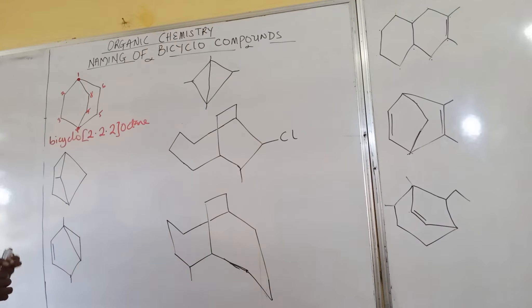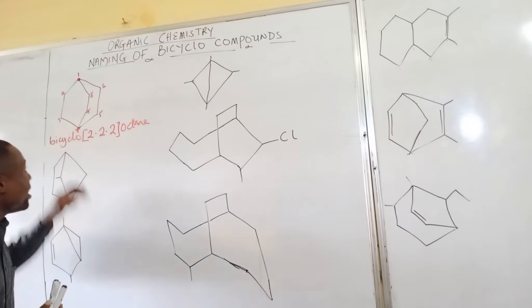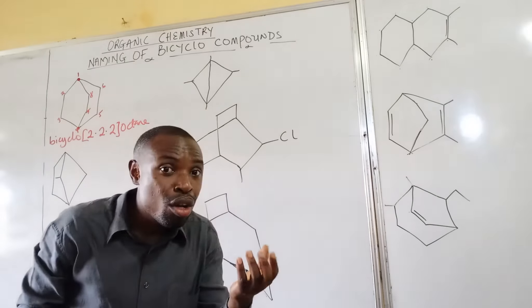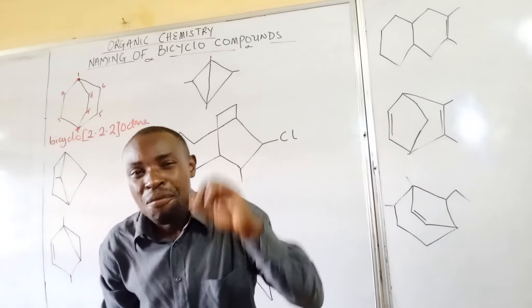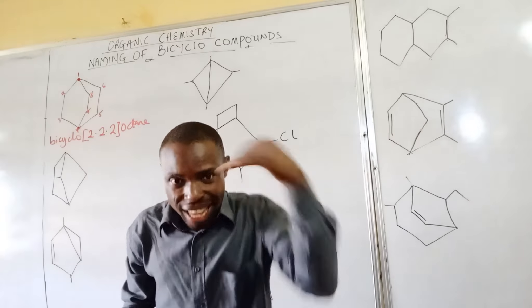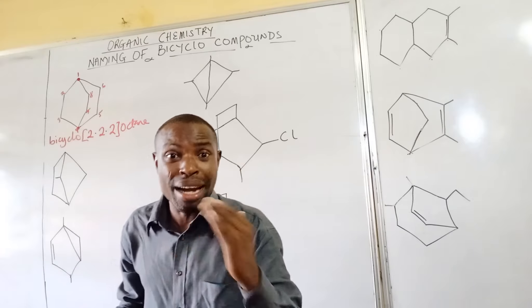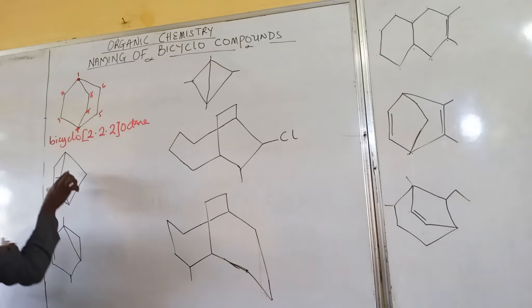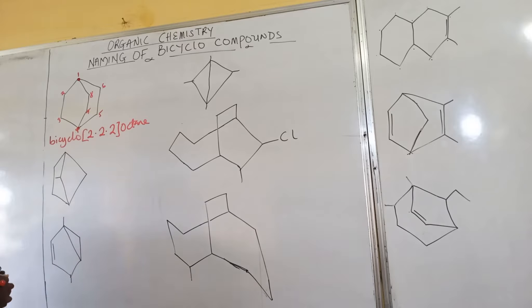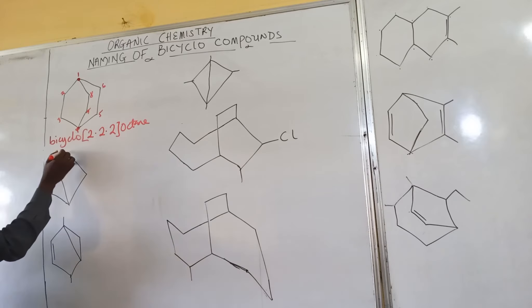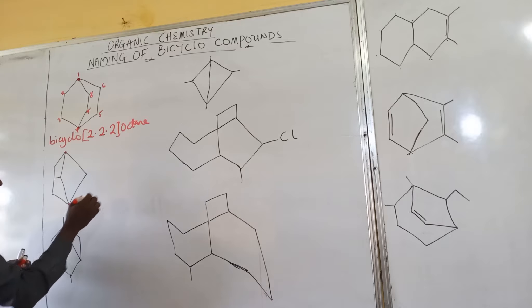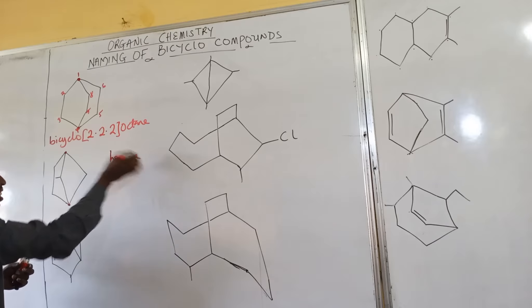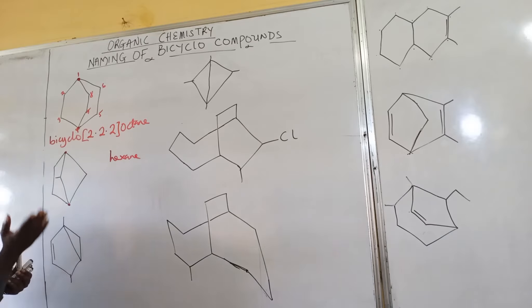Now moving to the next one. In the previous compound there was no substituent group, but when a compound has a substituent group, we must name the substituents first, then follow the normal rules for naming the bicycle compound. In this next compound, the bridgehead is here. How many carbon atoms do we have? One, two, three, four, five, six — it's six, so it is a hexane. Now we start to number from the larger side.